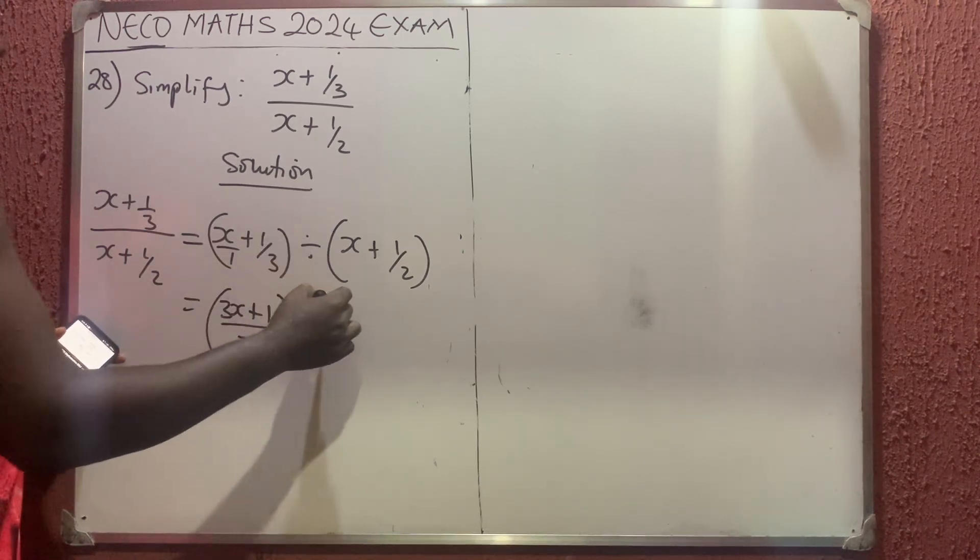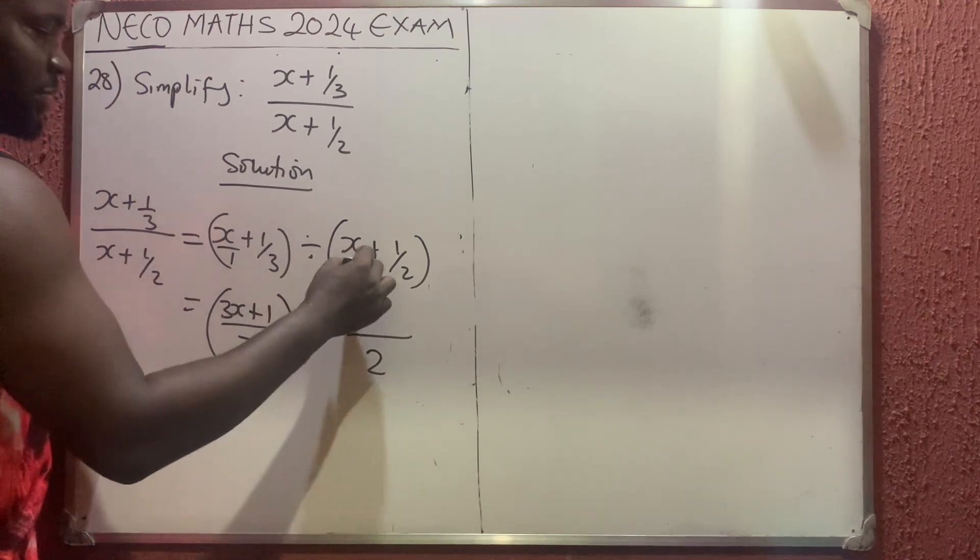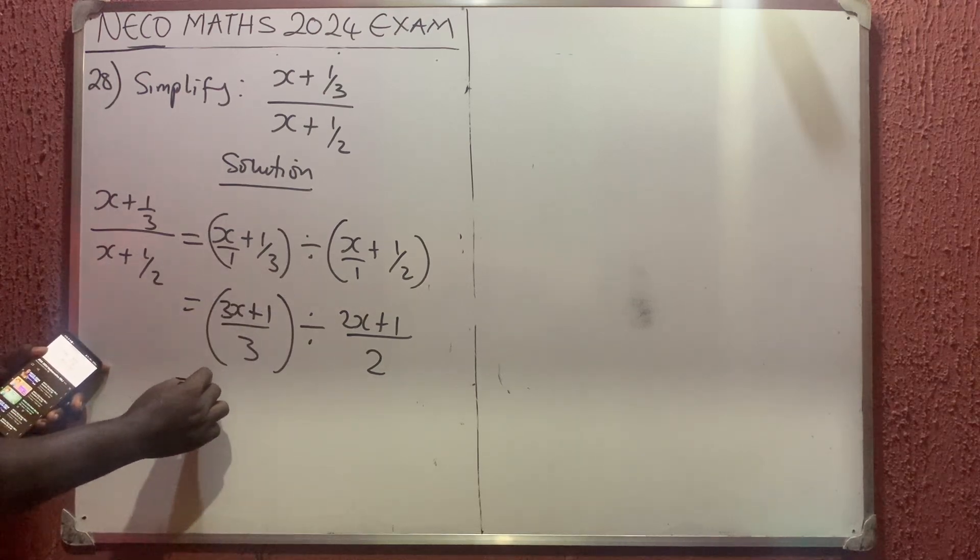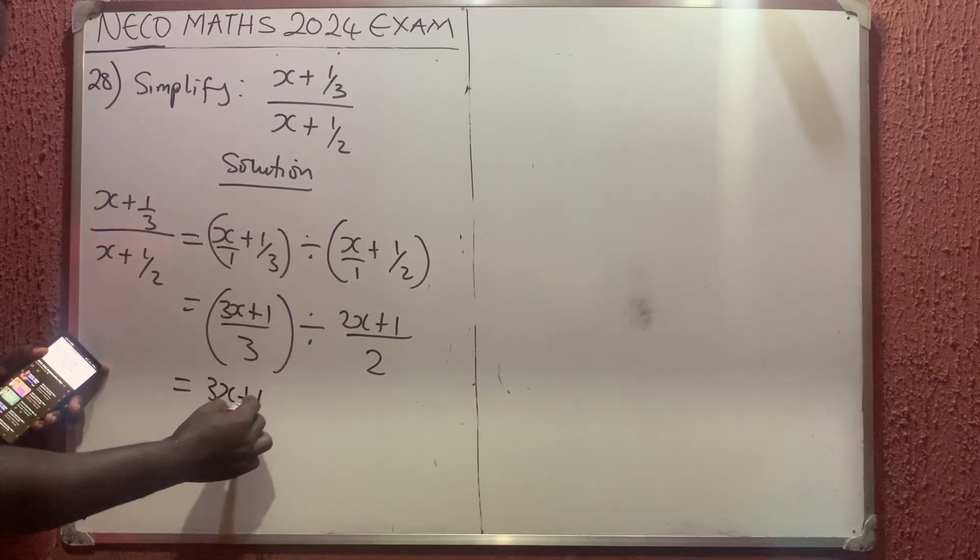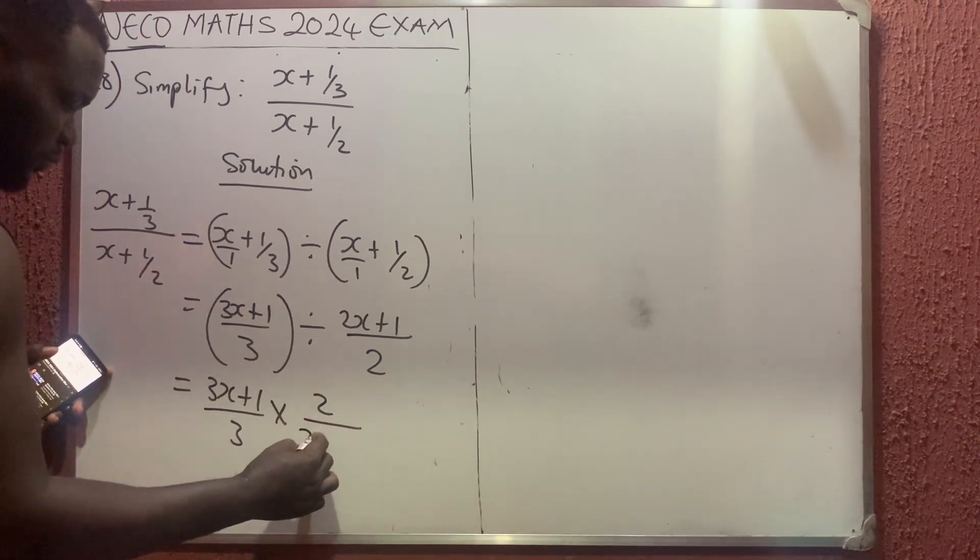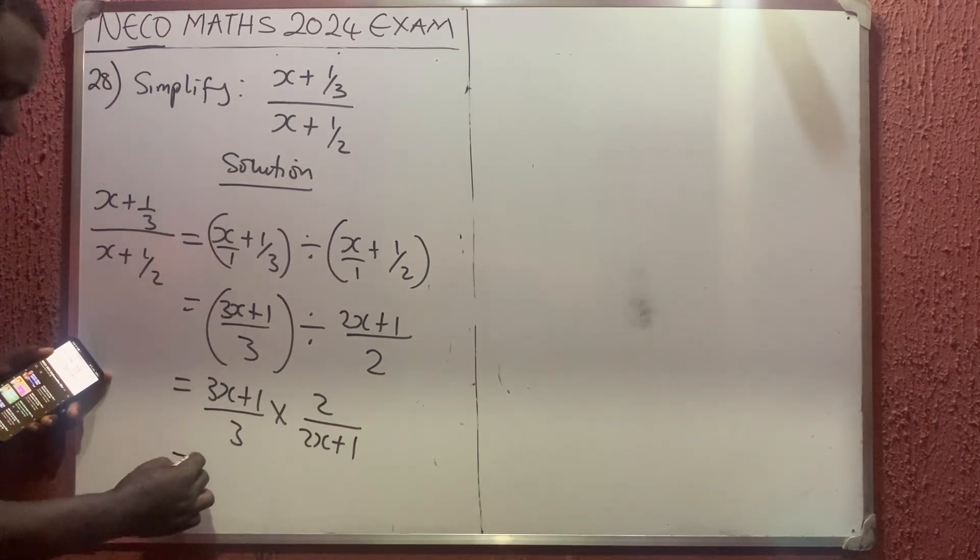Divided by - the same process applies here. The LCM is 2, giving us (2x + 1)/2. Now, when we change division to multiplication, we have (3x + 1)/3 times 2/(2x + 1).